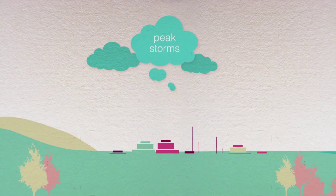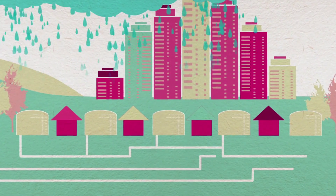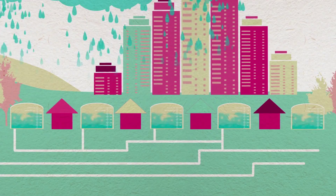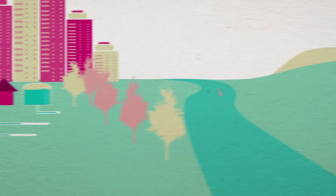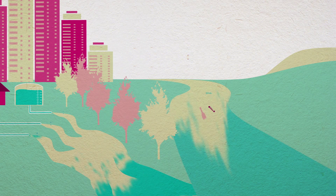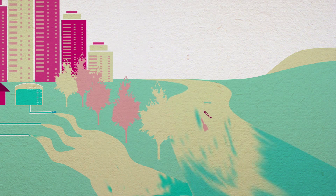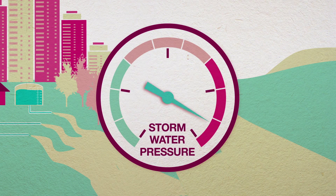We all know that peak stormwater discharges can be damaging, particularly in areas prone to flooding, if your infrastructure is at capacity or your stormwater flows directly into a creek. When major surface runoff occurs, it not only heavily impacts on the health of creeks and waterways, it can cause water pollution and places immense pressure on stormwater networks.